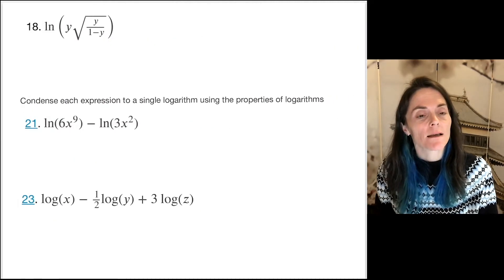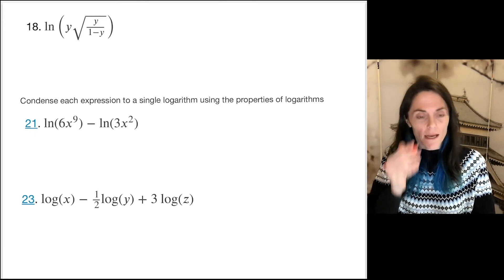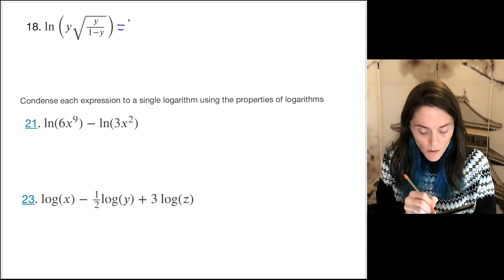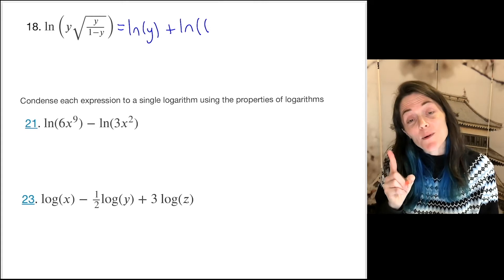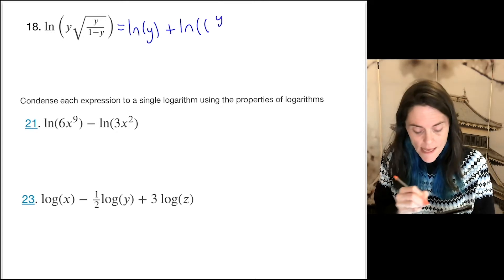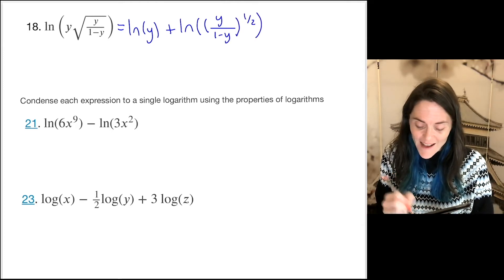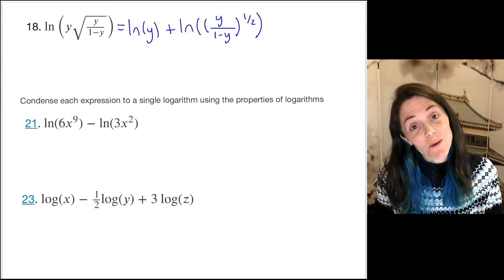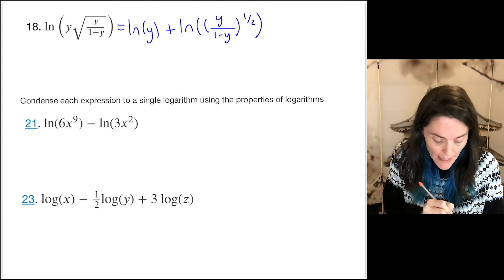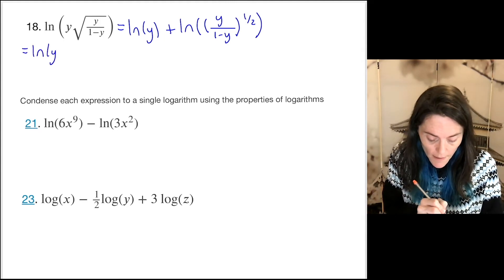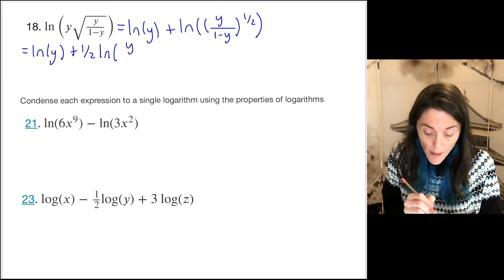Let's move on to the next question. Same directions — we want to expand as much as possible. The first thing I see is a product, so this will be the natural log of y plus the natural log of the square root. I'll write the square root as a one-half power of y over (1 − y). Inside the log I have a power of one-half, so I bring that in front as a multiple: ln y plus one-half times the natural log of y divided by (1 − y).